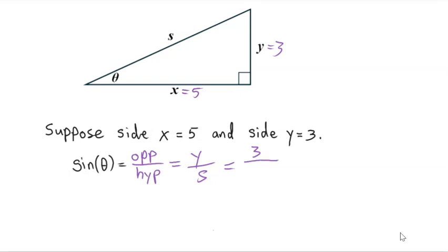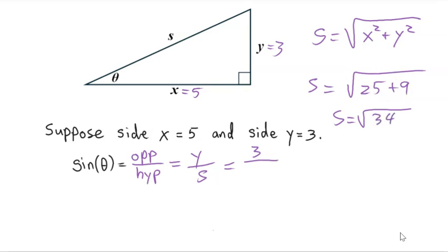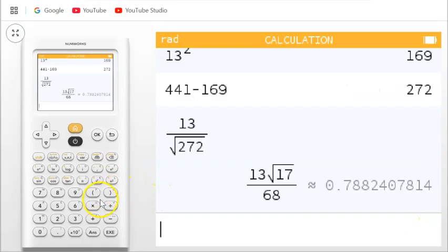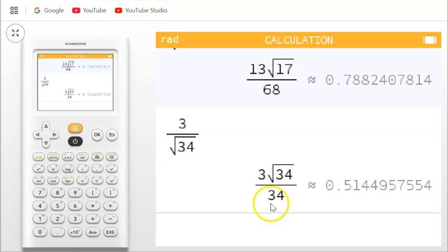Y is equal to 3, and we just need to find S. We can find the hypotenuse by taking the square root of the sum of the squares of the two legs. So we square 5, that's 25, and square 3, that's 9. So S equals the square root of 25 plus 9, which is the square root of 34. So sine of theta equals 3 divided by the square root of 34. We'll do that in a calculator: 3 divided by the square root of 34 gives us 0.514.